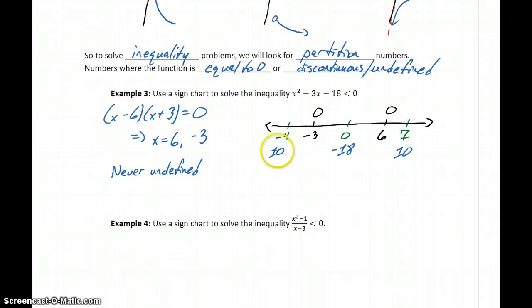So here, our function value would be positive. So on the interval from negative infinity to negative 3, our function value is positive. Then it changes to negative and changes back to positive. Meaning the interval that's going to be a solution for our inequality, which is where our function is negative, will be on the interval from negative 3 to 6.